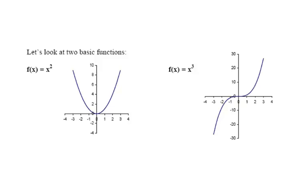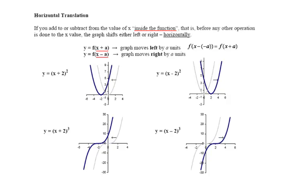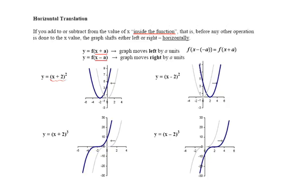The other function, f(x) = x³, is the parent cubic function. Let's look at horizontal translations of these two parent functions. If you add or subtract from the x value — inside the function — meaning whatever is happening to your independent variable, if that independent variable is being operated on by some mathematical operation and we add or subtract a value to it, that gives us a horizontal translation.